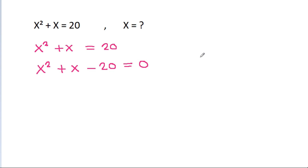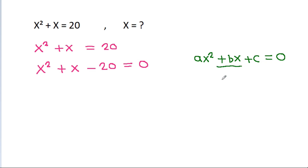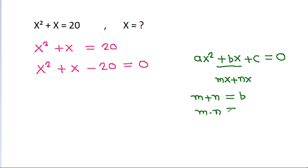For ax squared plus bx plus c is equal to 0, we need to write bx as mx plus nx, such that m plus n should be equal to b, and m times n should be equal to a times c.